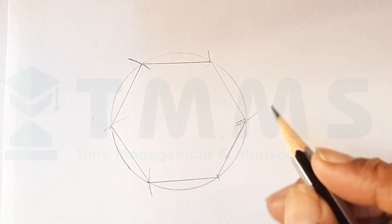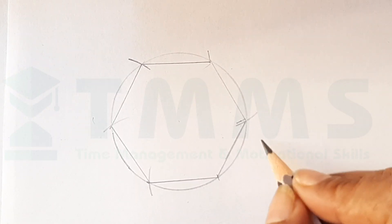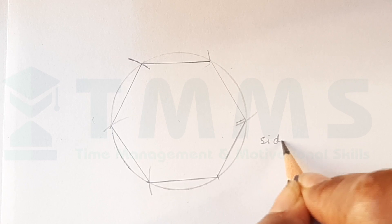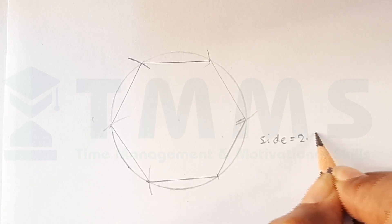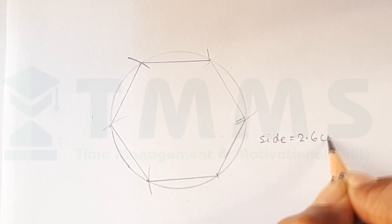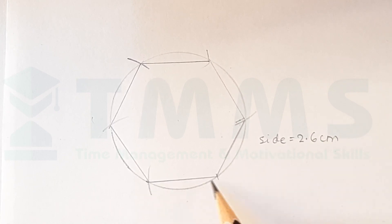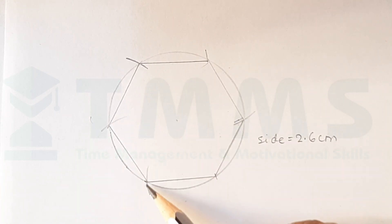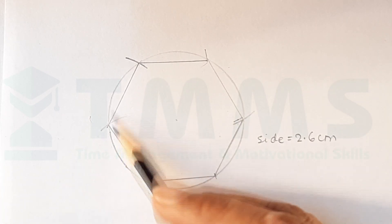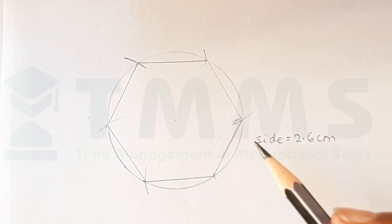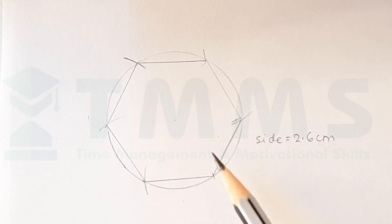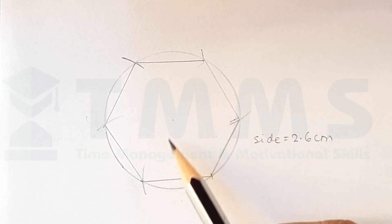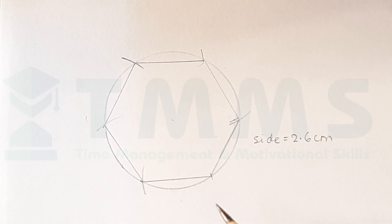So, if you want a hexagon with each side 2.6 cm, then you take 2.6 cm as the radius and draw the circle and draw the arcs as shown. Now, in order to draw the circumcircle or incircle, this method does not work.